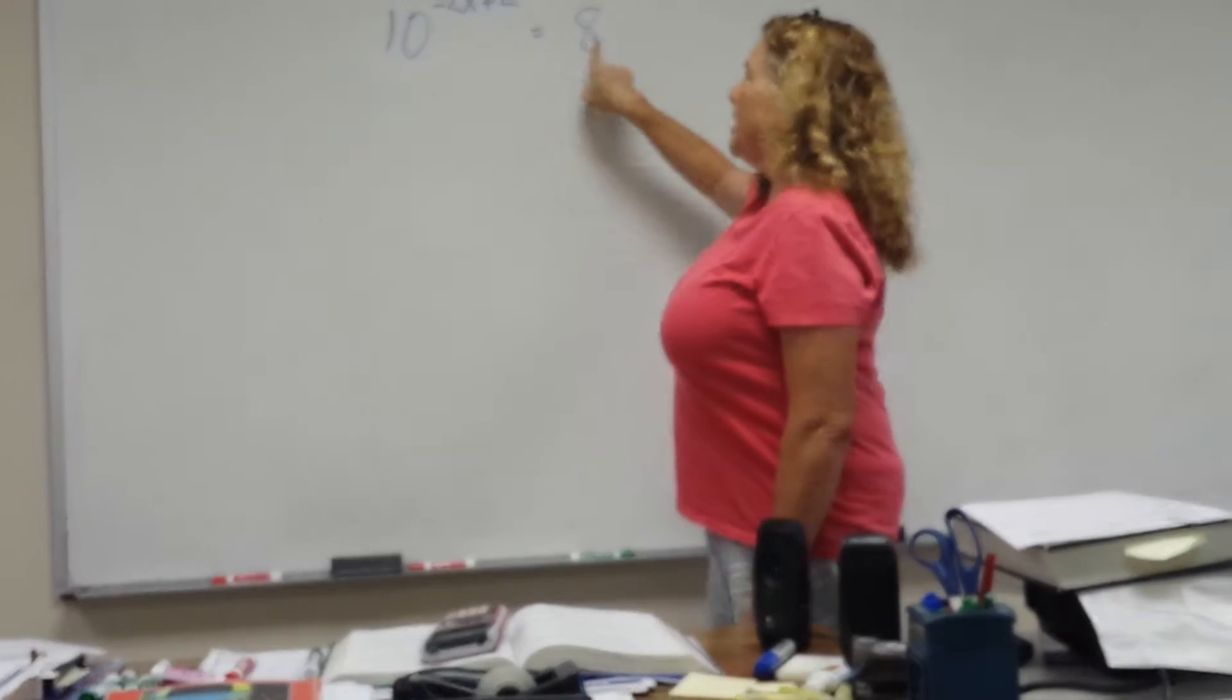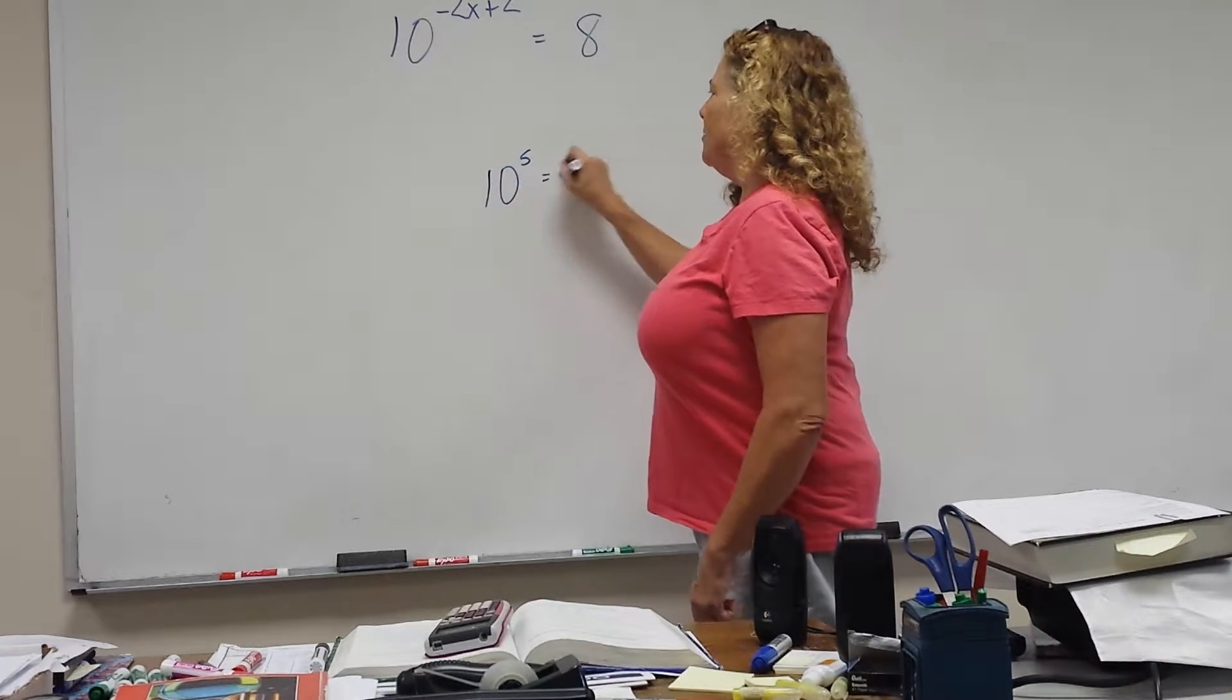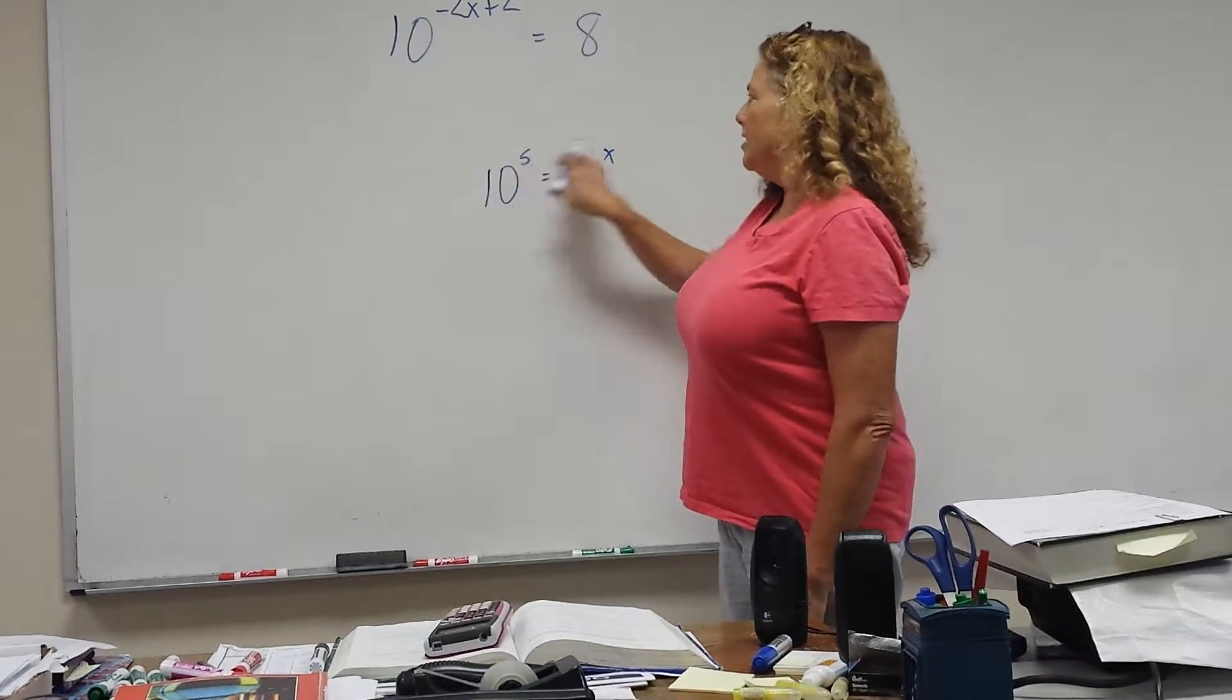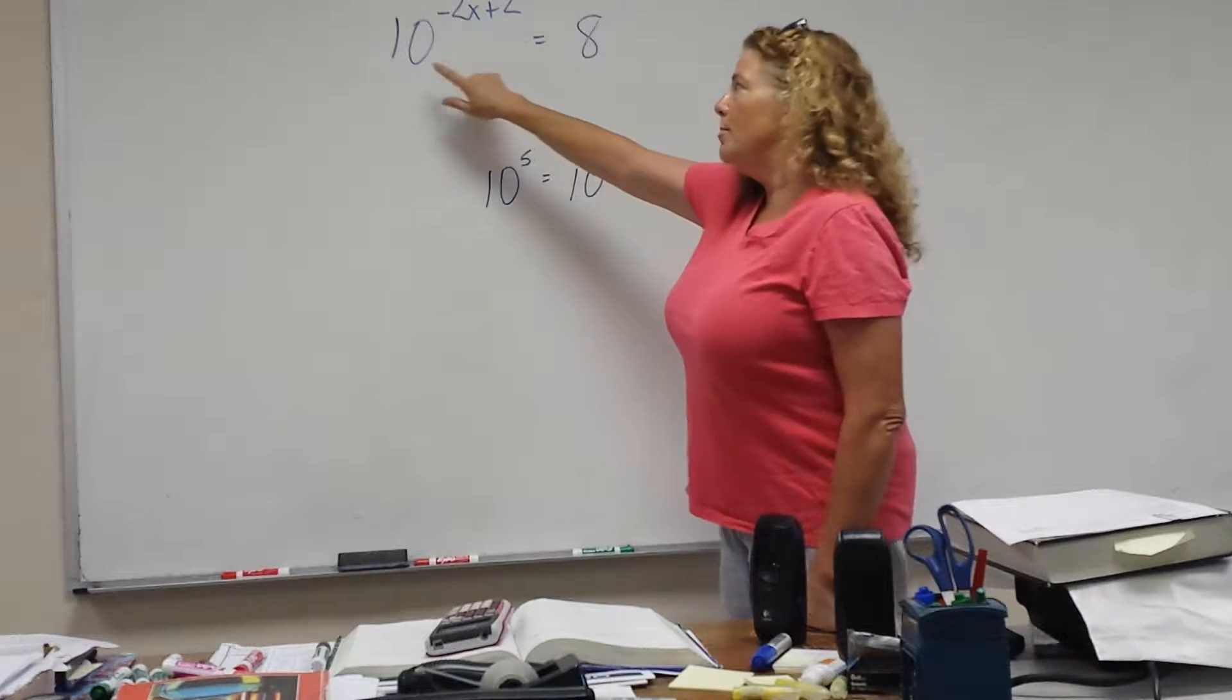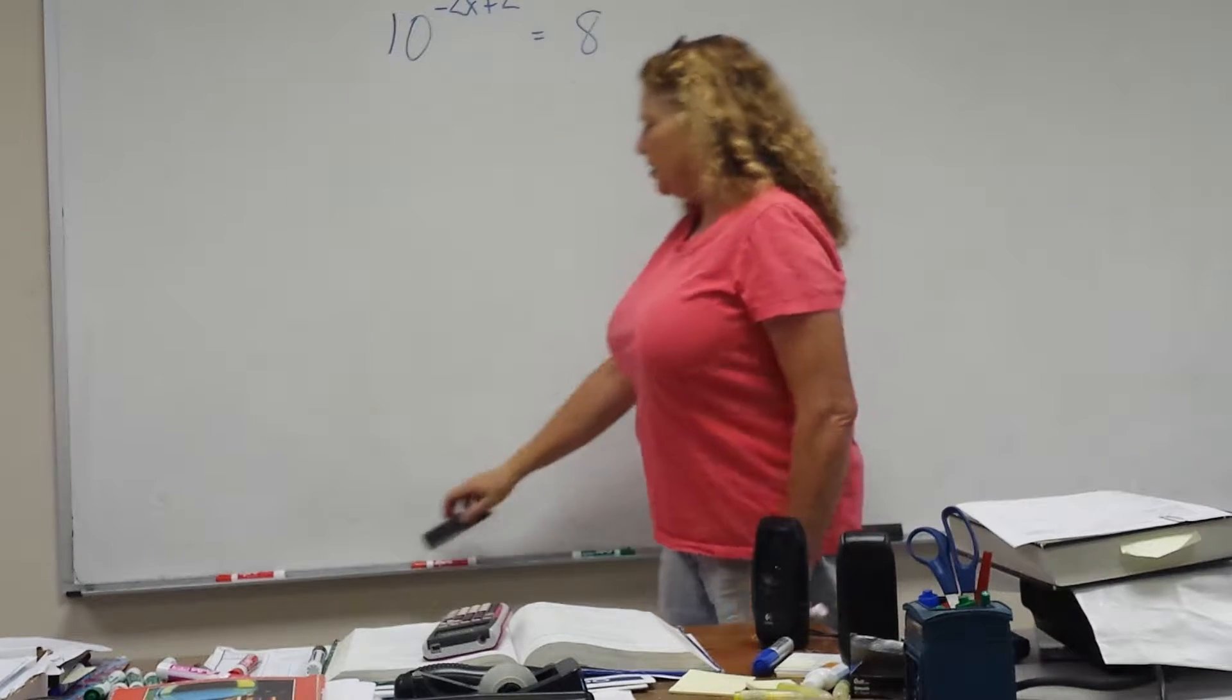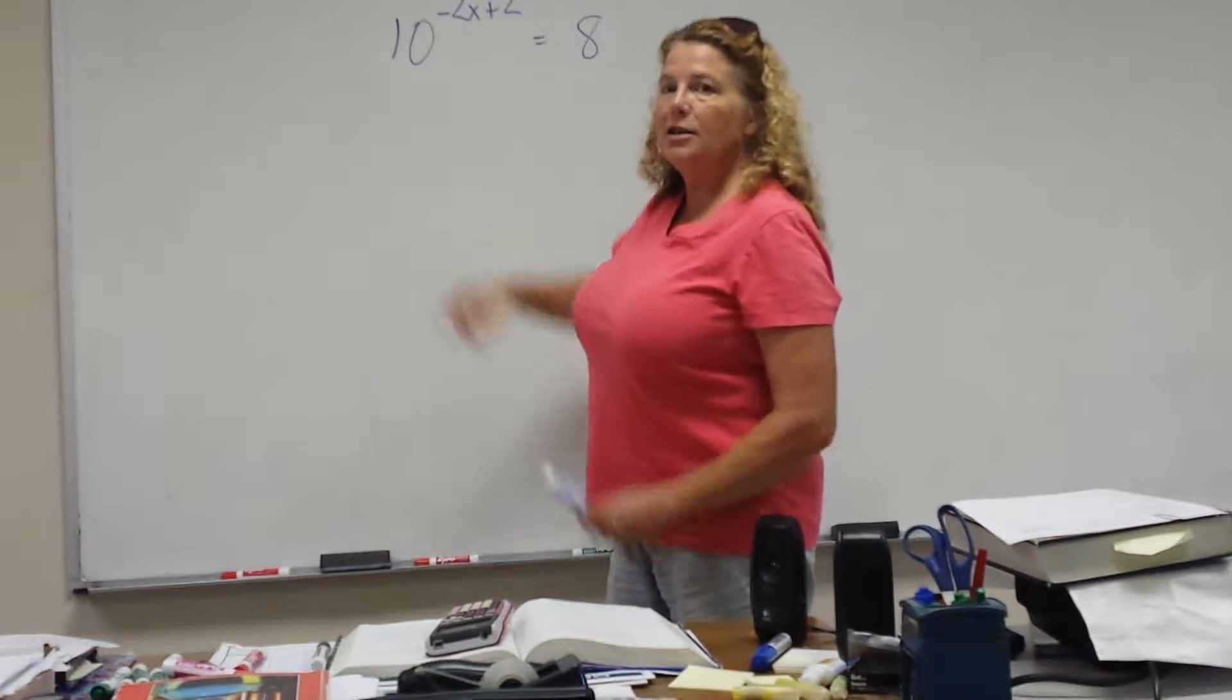Because if you have the same bases on each side, if I said 10 to the 5th equals 10 to the x, that's easy to solve. The exponents are equal. So if we do the same thing here and make them both base 10, then we can solve this equation. So we would choose log because log is base 10.